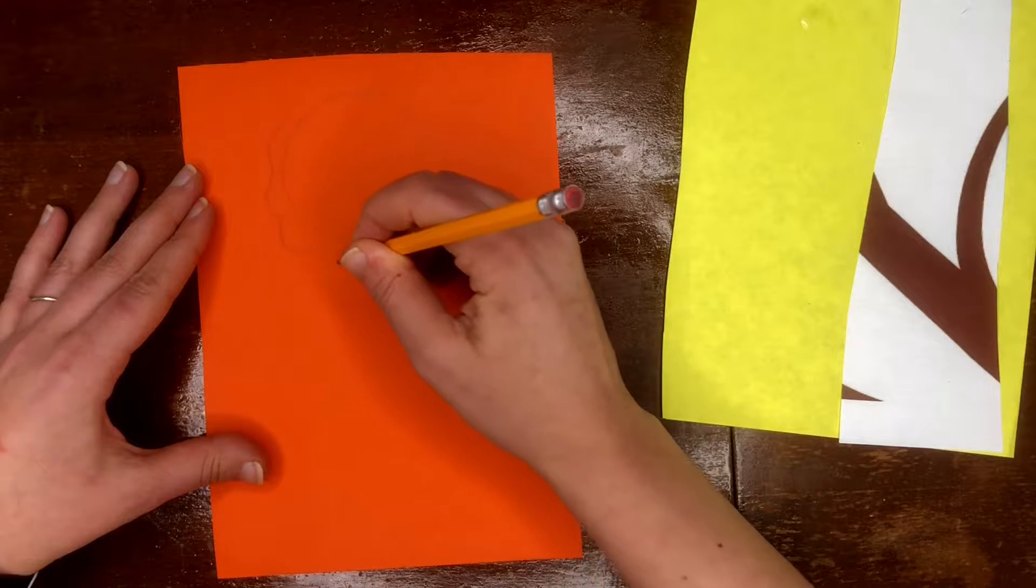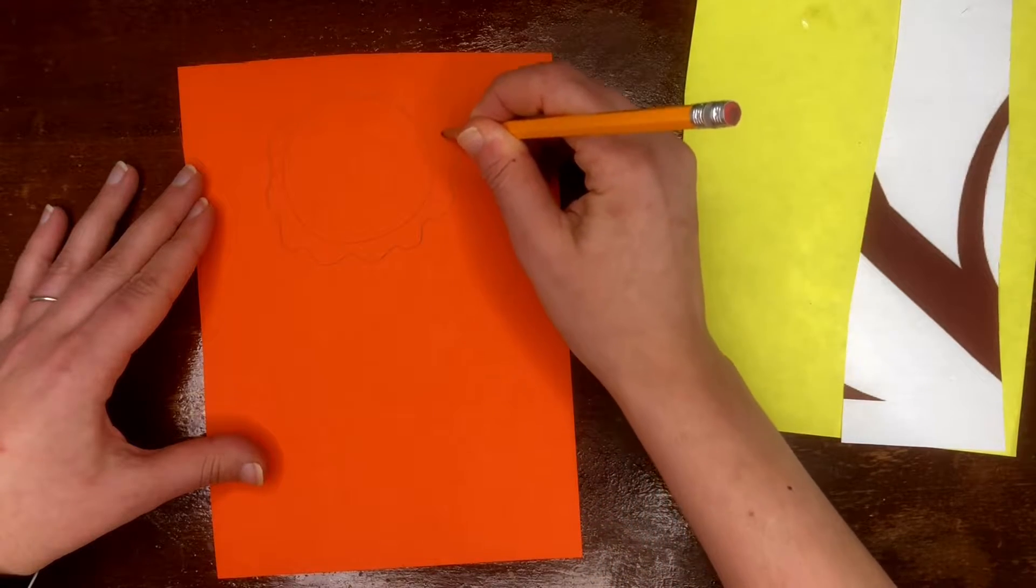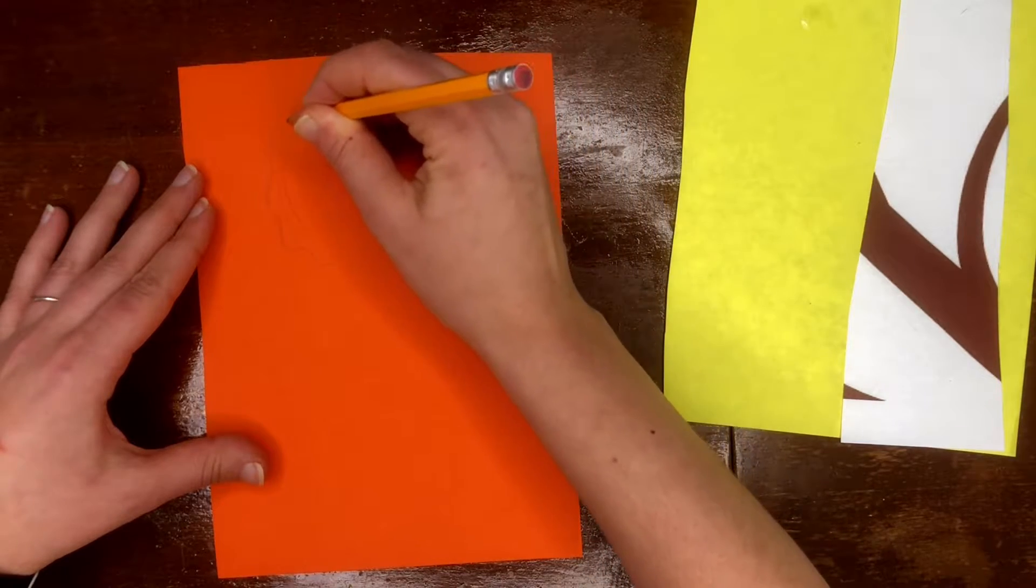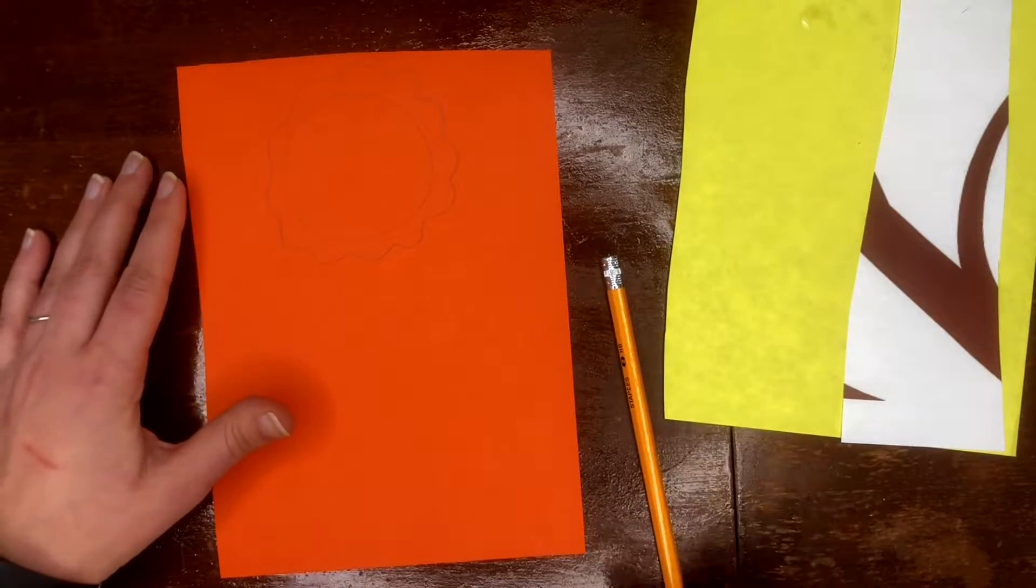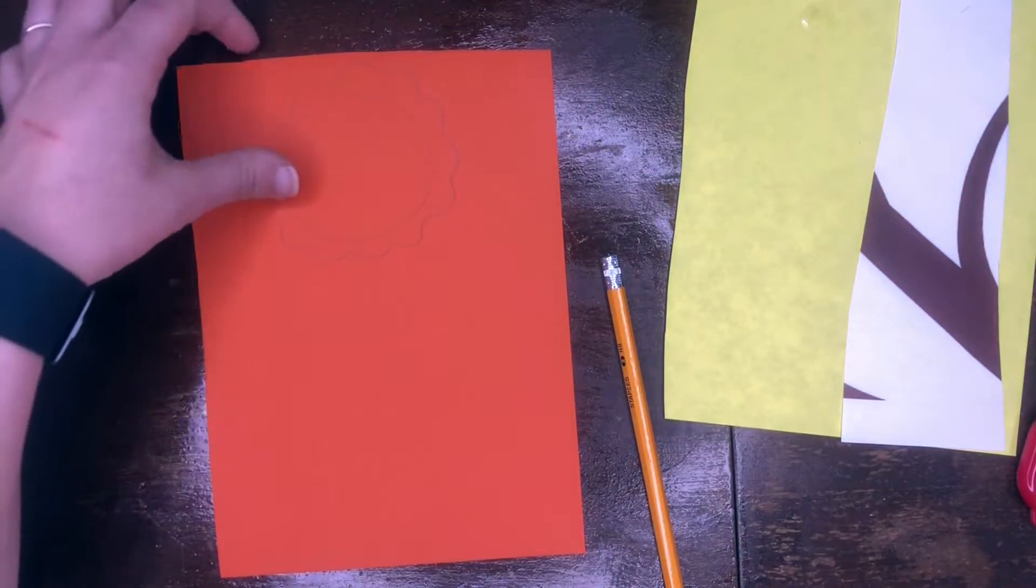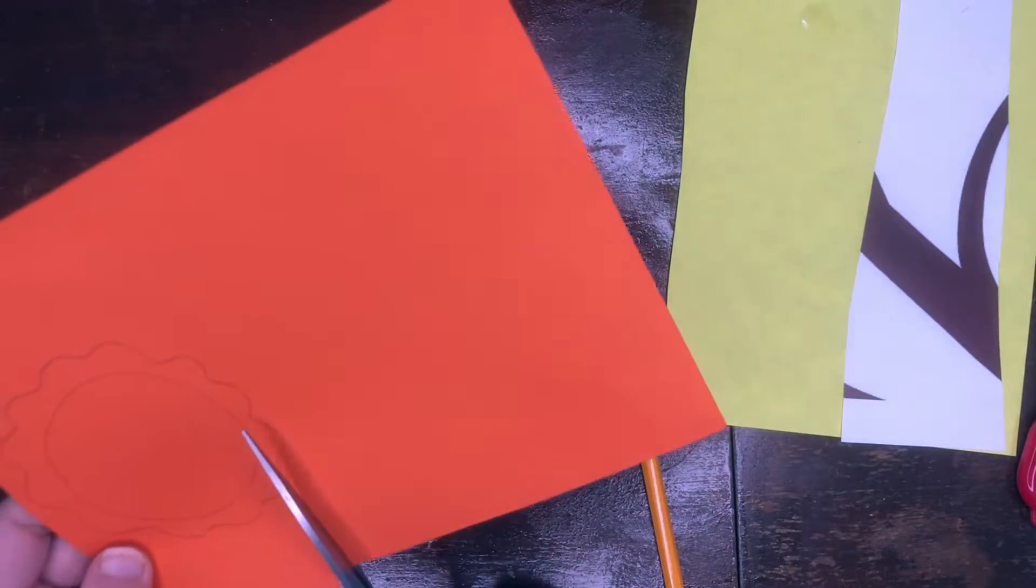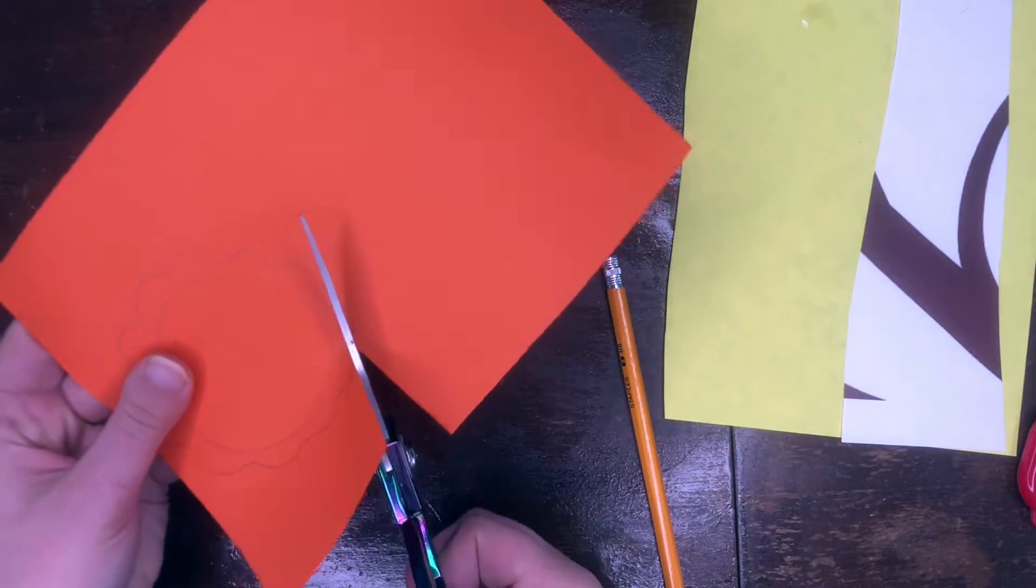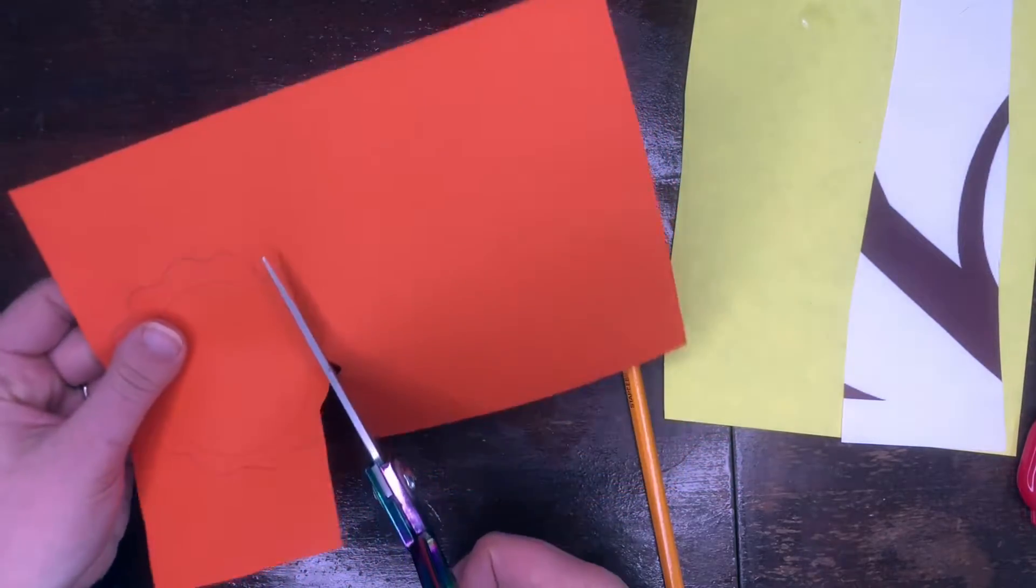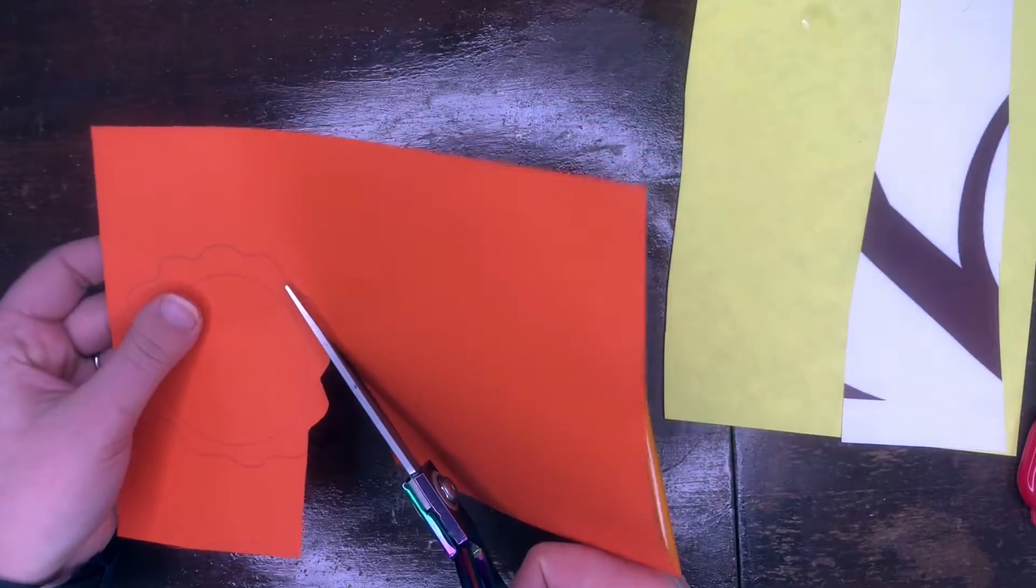It can be as big or small as you want. And then, a wavy line around it. Now, we're gonna go ahead and cut that out. Remember, move your paper, not your scissors.